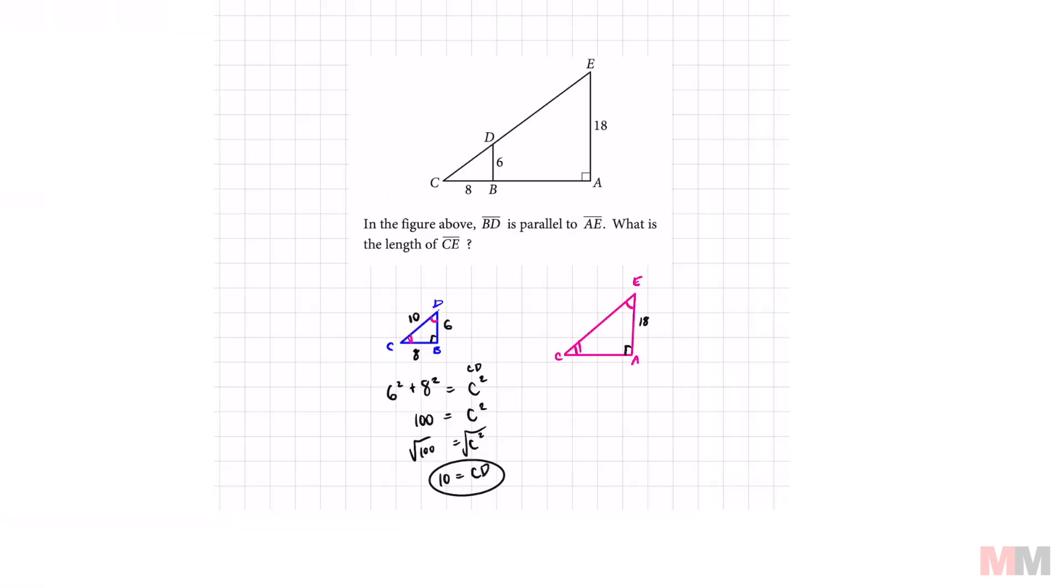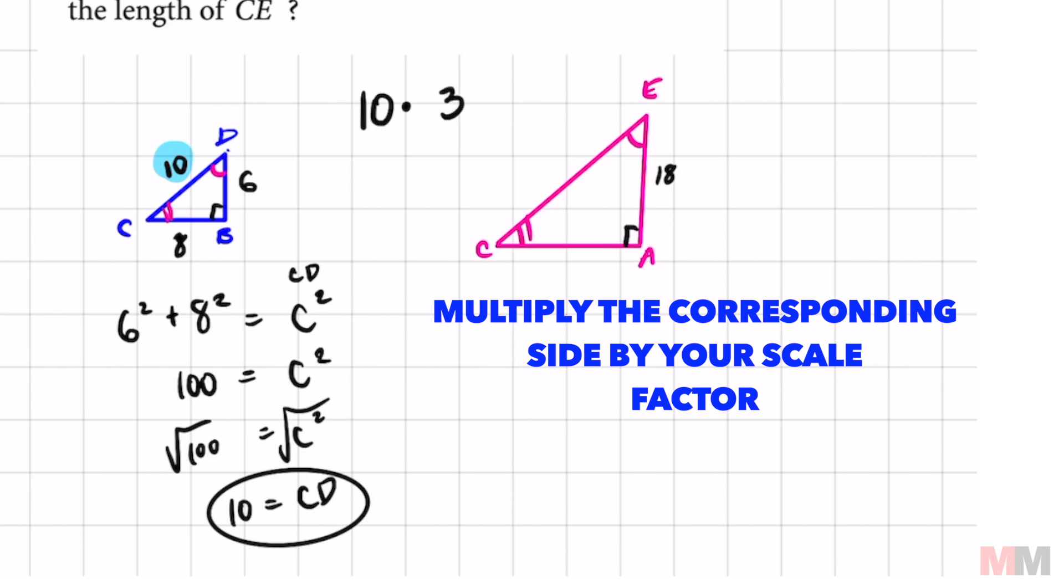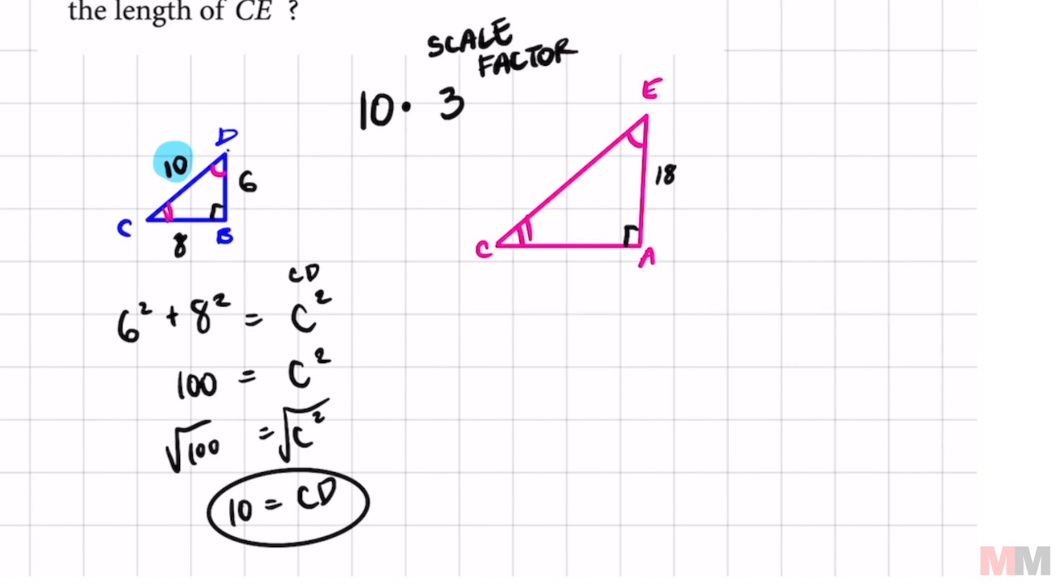So earlier we said the scale factor of this is 3. And now that I have CD, all I have to do is multiply by 3 because that's my scale factor. And I will get length CE, which equals 30.